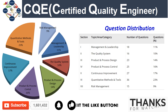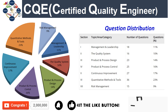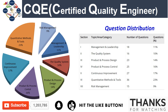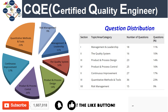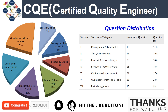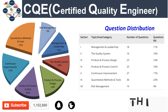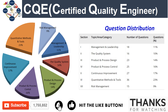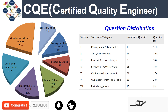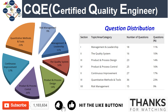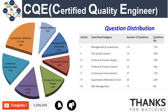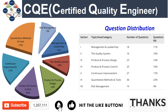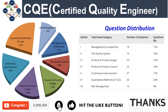The questions are distributed over six to seven different topics. The first three topics — management and leadership, the quality system, and product and process design — constitute around 25% of the questions. The remaining topics constitute around 75% of the questions. The most important topics, which include numerical questions, are quantitative methods and tools, continuous improvement, and process controls.